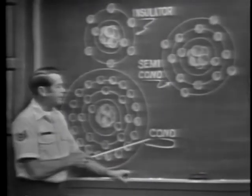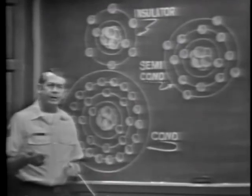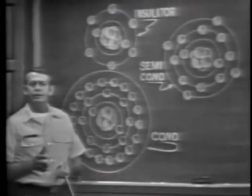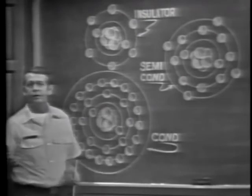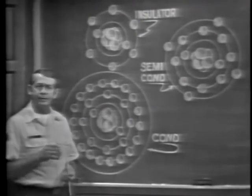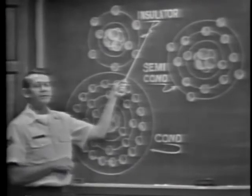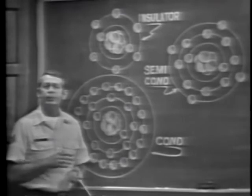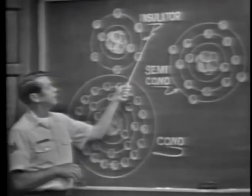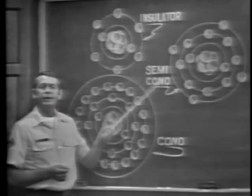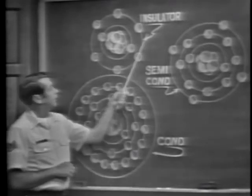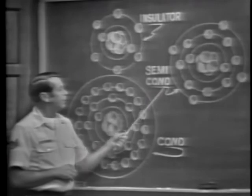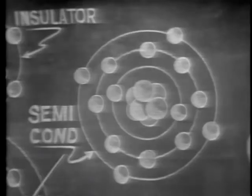Conductors have many free electrons — they allow current to flow with ease. If conductors don't oppose current, they must have very little resistance. That's why the wire burned up earlier — it was a copper conductor. On the other hand, insulators have very few free electrons; in most cases they prevent current flow. Insulators then have a high resistance, which is why a large voltage was required to move electrons through air. Low resistance here, high resistance there.